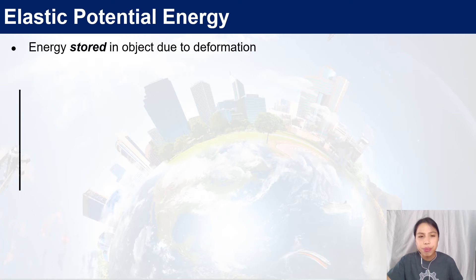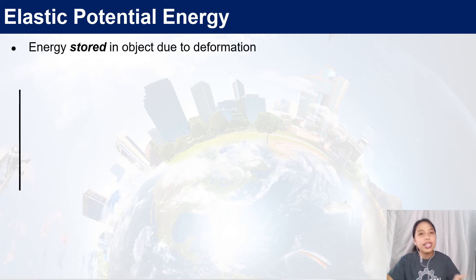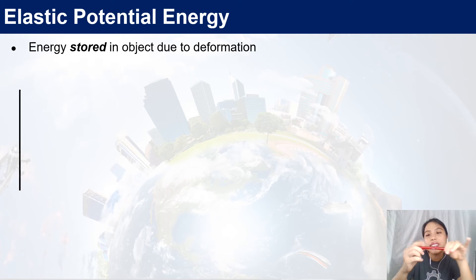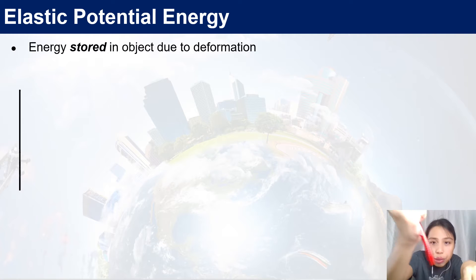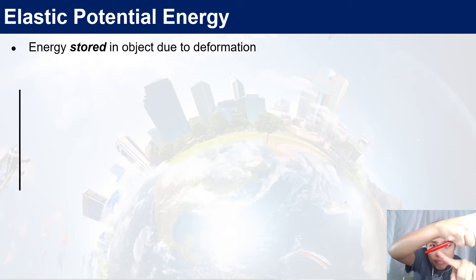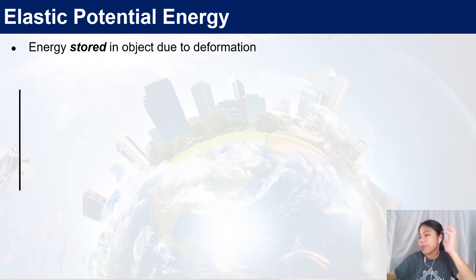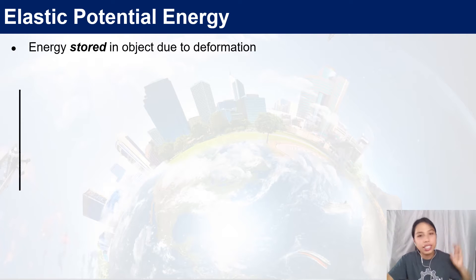What is elastic potential energy? It's basically energy stored in an object due to deformation. If you have a clicky pen, you could take it out and look at the spring inside. Every time you press the pen, you're actually compressing a spring. When you release it, it clicks, because that stored energy is released. That stored energy is what we call elastic potential energy.